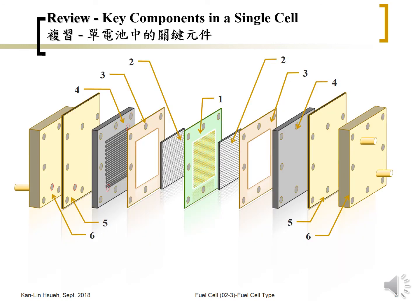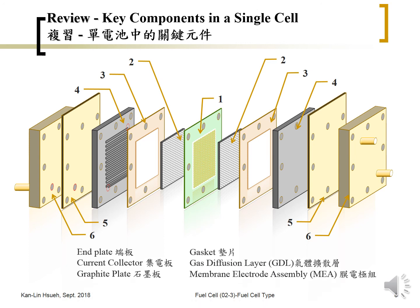So these are the key components in a single cell. Hopefully you can notice each key component: one, two, three, four, five, six. The first is the MEA — membrane electrode assembly; the second is the gas diffusion layer; the third is the gasket; the fourth is the graphite plate, channel plate, or carbon plate; the fifth is the current collector; and the sixth is the end plate. I hope you understand each one and the reason why each is there.